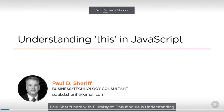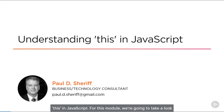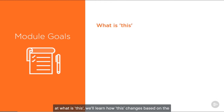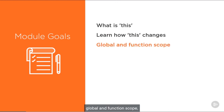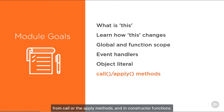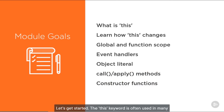This module is understanding 'this' in JavaScript. We're going to take a look at what 'this' is, how it changes based on global and function scope, whether it's in an event handler, within an object literal, called from the call or apply methods, and in constructor functions. Let's get started.